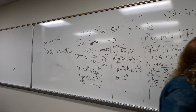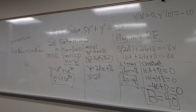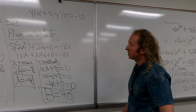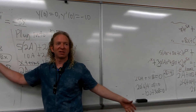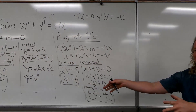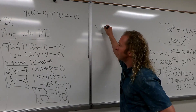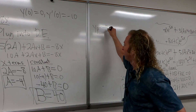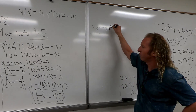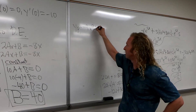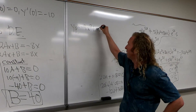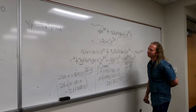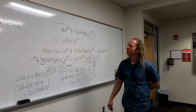So now we can plug A and B into our Yp. So Yp equals negative 4x squared plus 40x. I'm going to put that in a box.